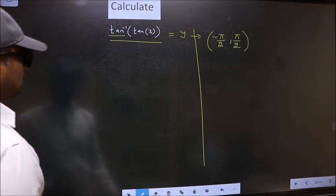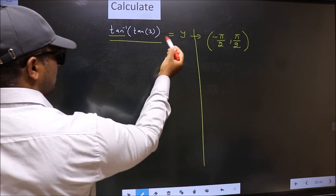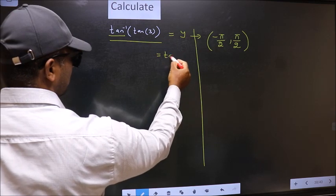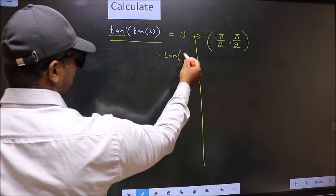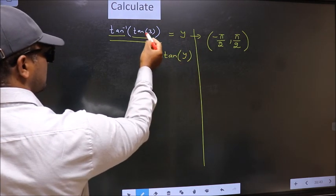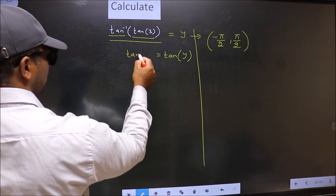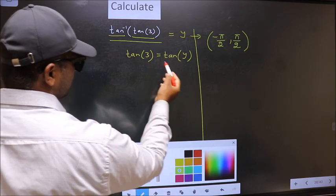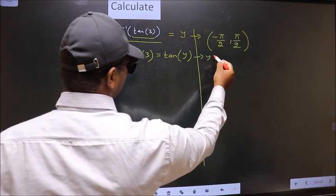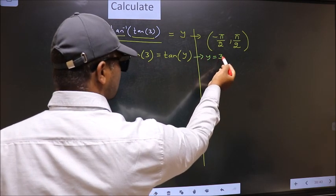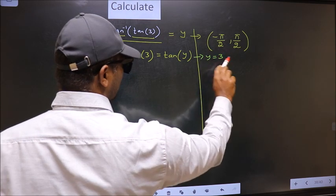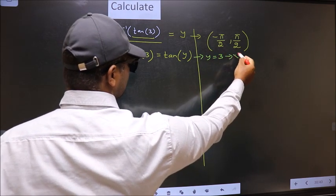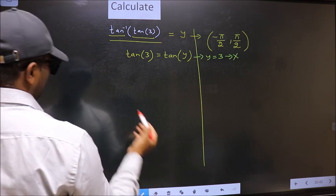Shift tan inverse to the other side. It will become tan y, and this, no change. Now comparing both sides, we get y to be 3. Does 3 lie in this interval? No. So reject this answer.